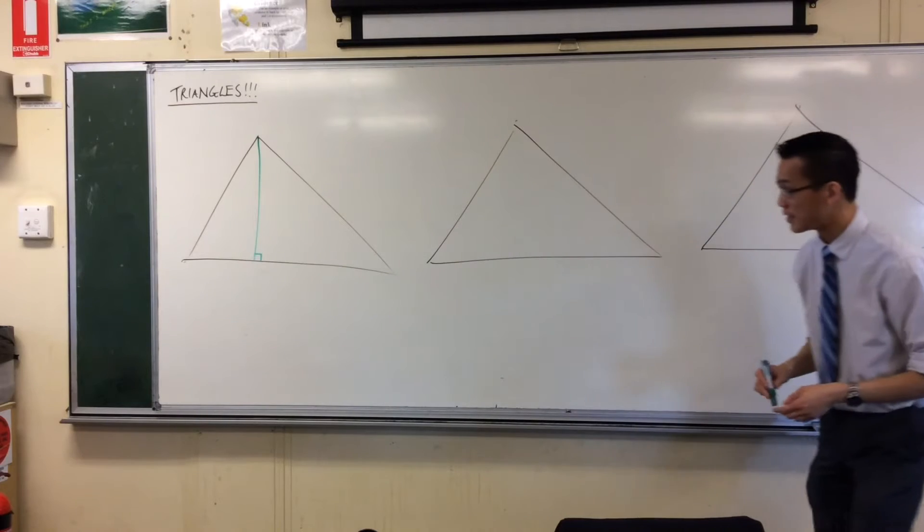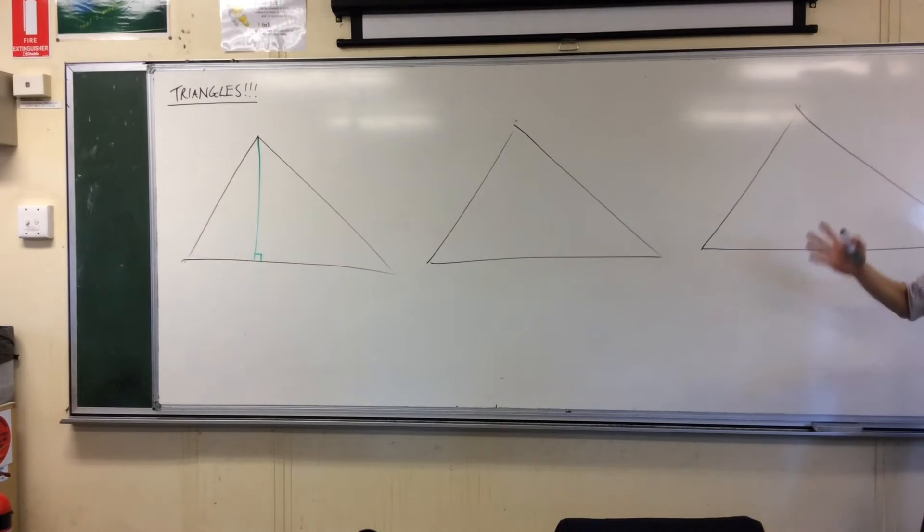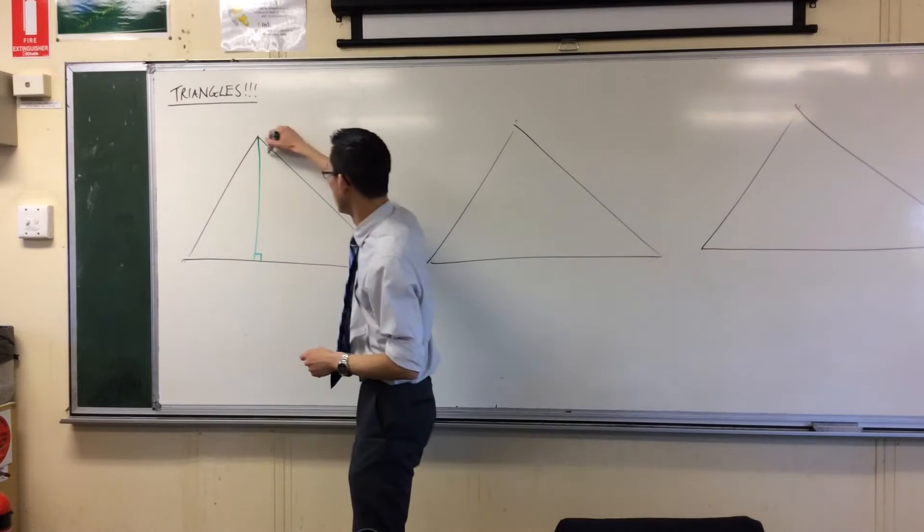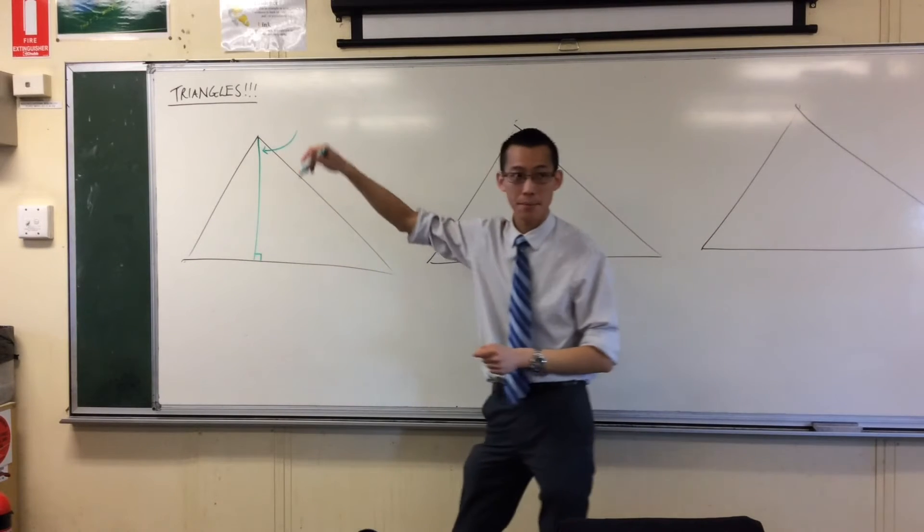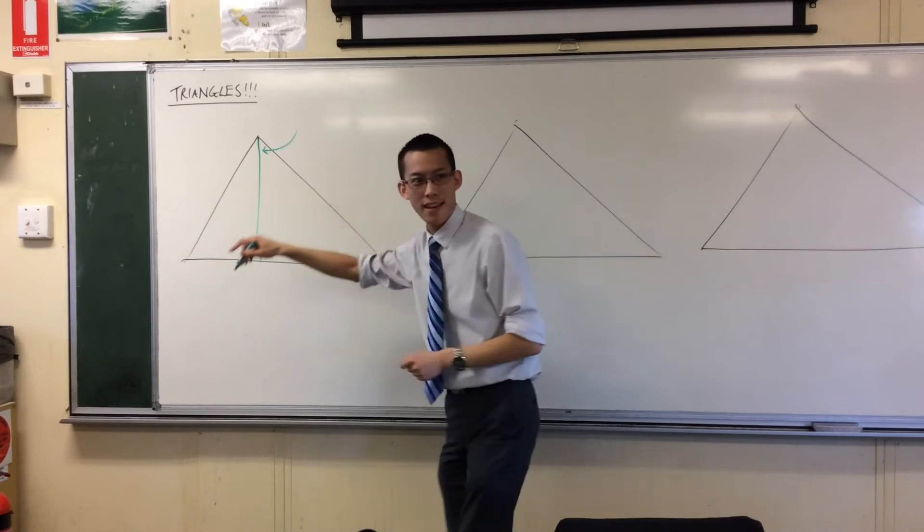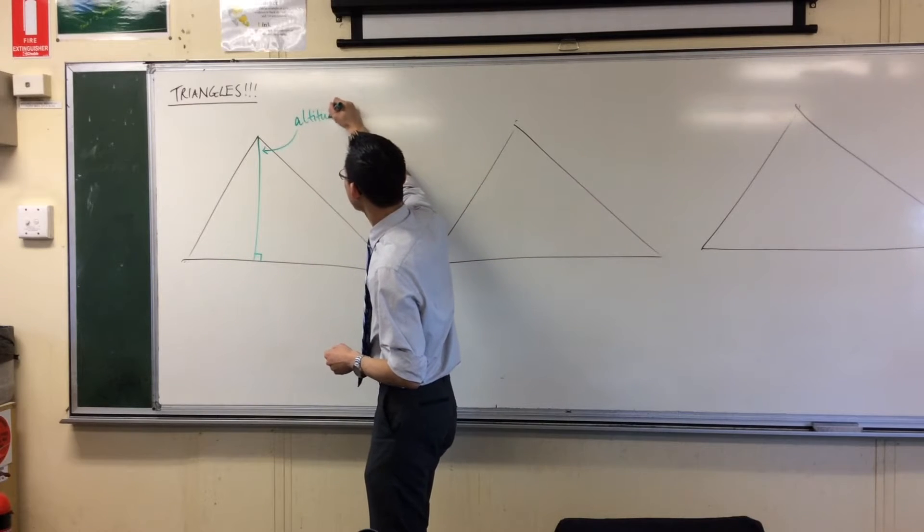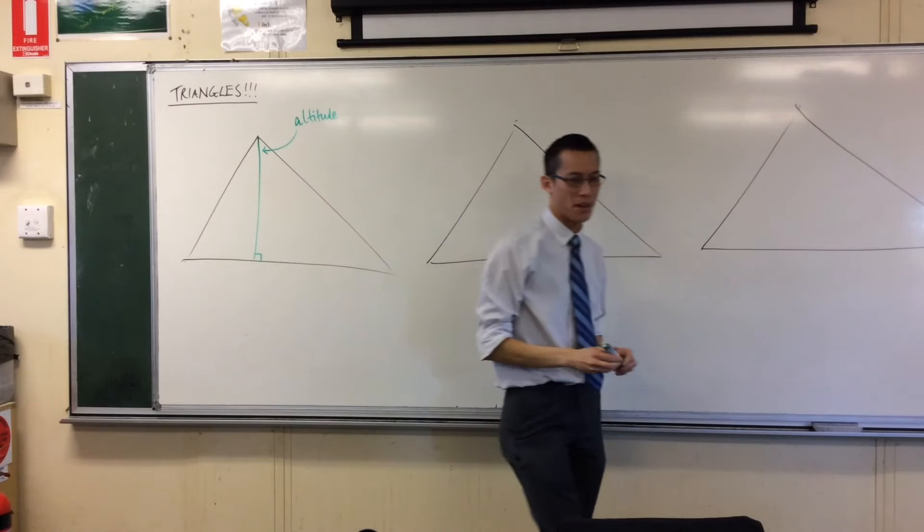You might know this as the perpendicular height of the triangle, which it is if you were working out an area, but more specifically it is called an altitude.